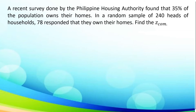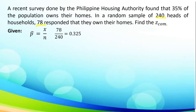To deepen our understanding, let us utilize the given formula in the following example. A recent survey done by the Philippine Housing Authority found that 35% of the population owns their homes. In a random sample of 240 heads of household, 78 responded that they own their homes. Find Z-sub-com. Let us determine first the given. P-hat is equal to X over N, where X is 78 and N is 240 heads, which gives 78 over 240 equal to 0.325. P is 35%, converted to decimal, which is 0.35. Our given sample N is 240.